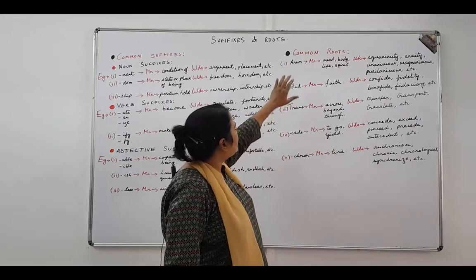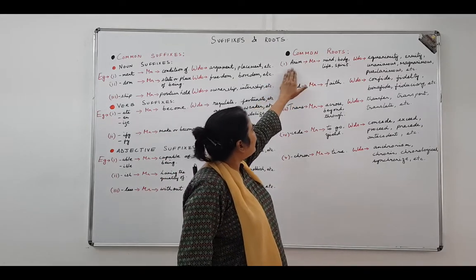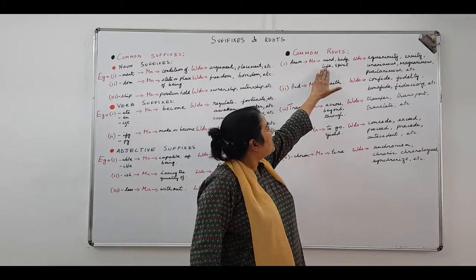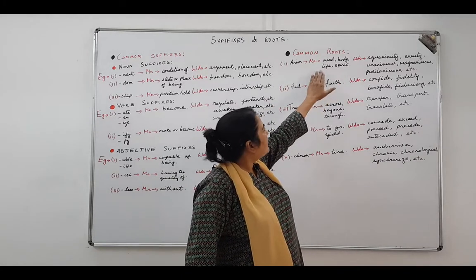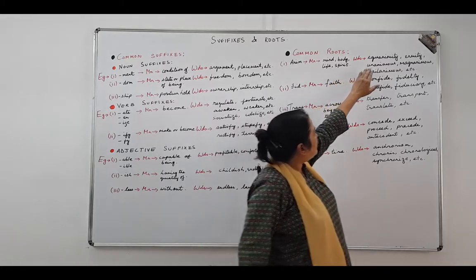Now we move to some common roots. In the common root section, the first one is a-n-i, which means mind, body, life, or spirit. Look at the words: equanimity.